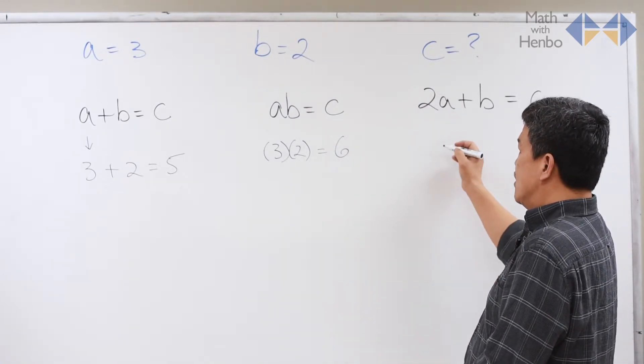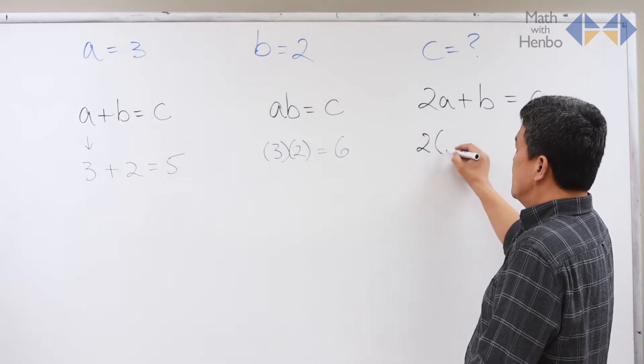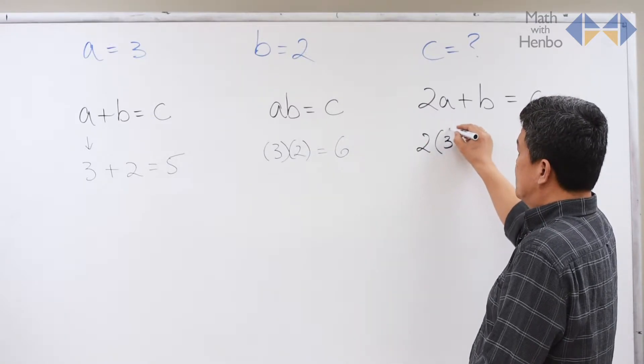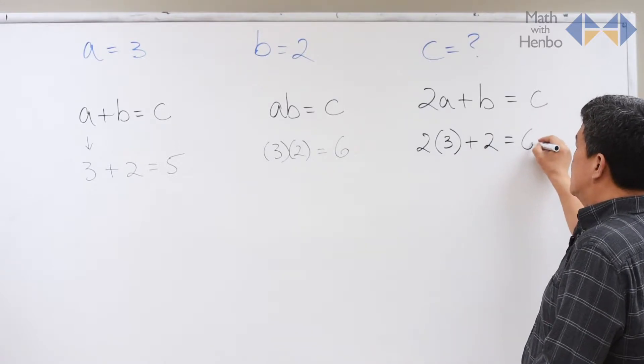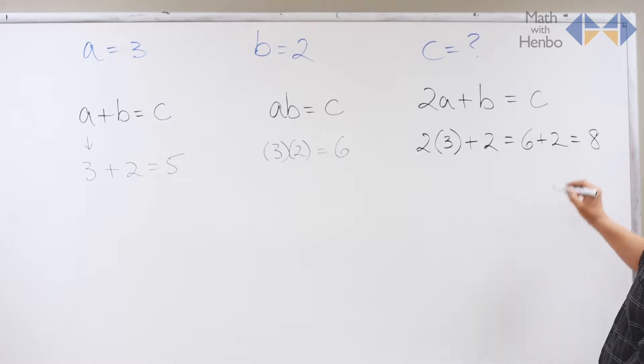For the third kind where you get a number in front, don't worry about it. Just put the substituting number in there. So that's 6 plus 2, which becomes 8.